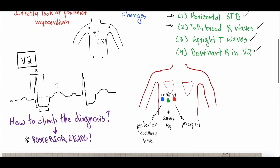But how do you clinch the diagnosis? Posterior leads. You flip the patient around so they're facing away from you, and place three leads — V7, V8, and V9 — on their back on the left side. V7 goes at the posterior axillary line, V8 at the scapular tip, and V9 is paraspinal. You then hook these up to the 12-lead ECG machine.